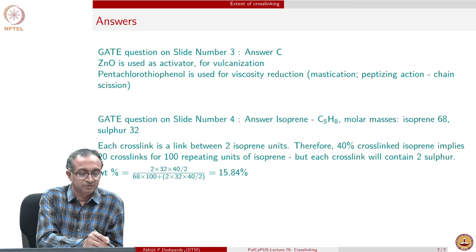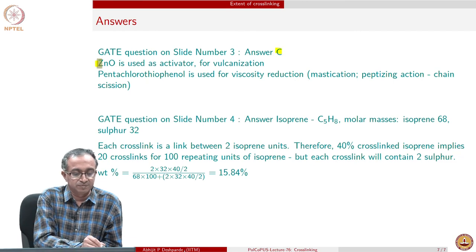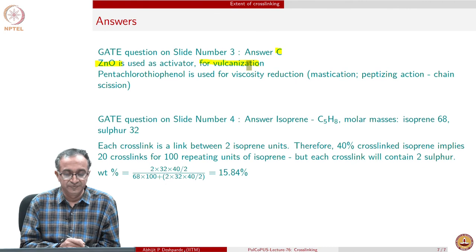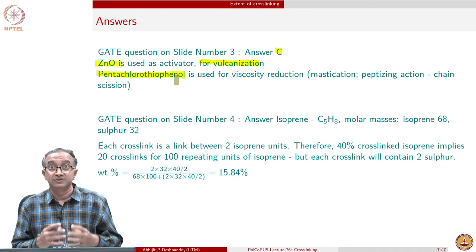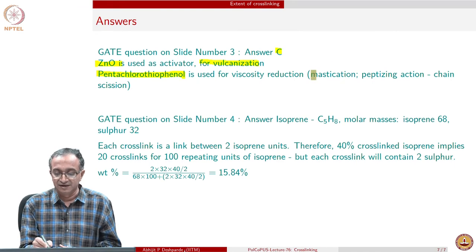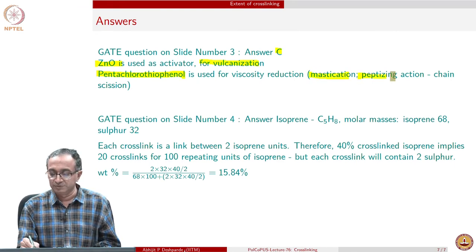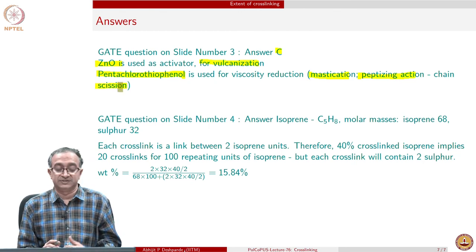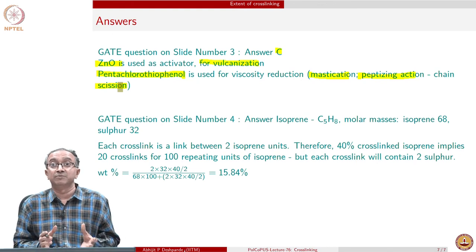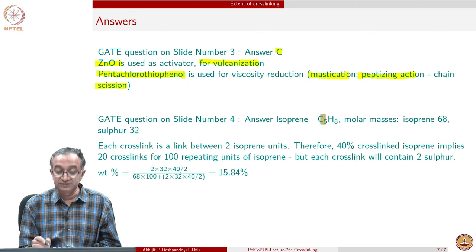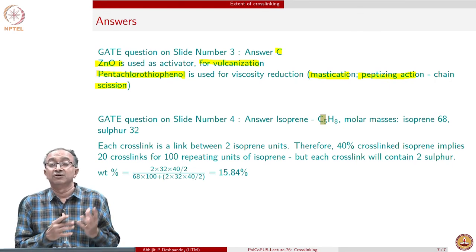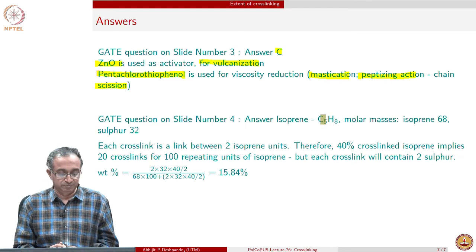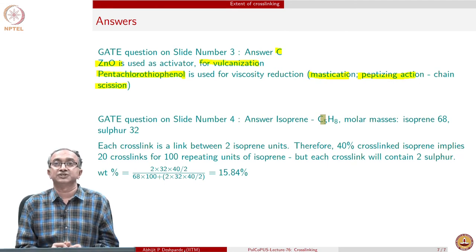The questions we discussed were related to what are the different additives. Zinc oxide is used for vulcanization as an activator. Also, depending on the process involved, we could use an additive to decrease the viscosity for ease of processing and mixing — also called mastication or peptizing action — which leads to chain scission and therefore reduction in molar mass. Different additives are added in our overall rubber formulation depending on the requirement. The other question related to sulphur and isoprene crosslinks is based on accounting of how many sulphur atoms there are and how many isoprene groups. With this, we will close the lecture and discussion on crosslinking. Thank you.